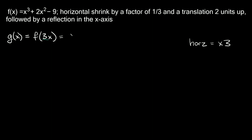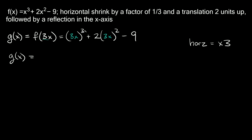So f of three x is going to be equal to: x cubed becomes three x cubed, plus two times x squared becomes two times three x squared. Now if we simplify, remember you always have to apply an exponent to everything inside the parentheses — to the number and to the variable. So three cubed is 27, giving us 27x cubed. Then three x squared is nine x squared, and we're still multiplying by the two out here, so two times nine is 18 — giving us plus 18x squared, and then minus nine.